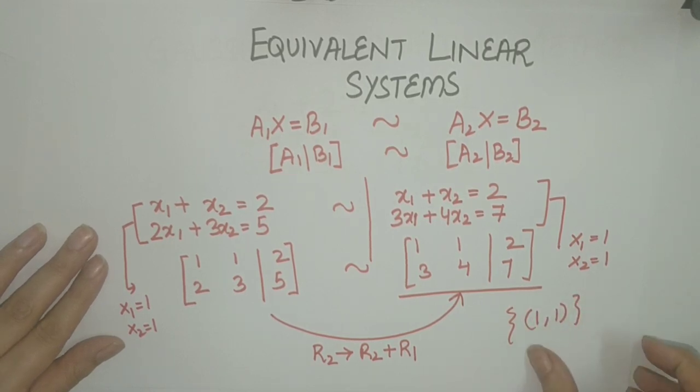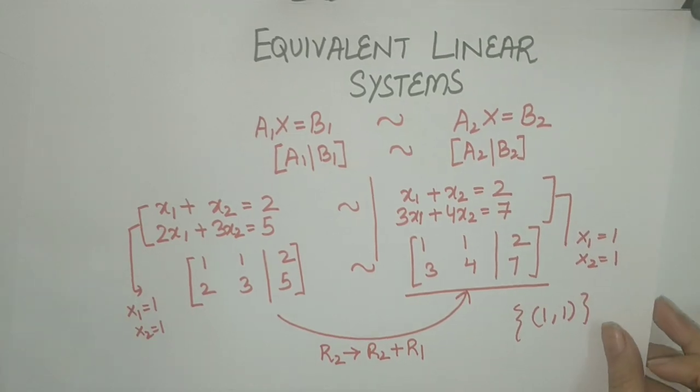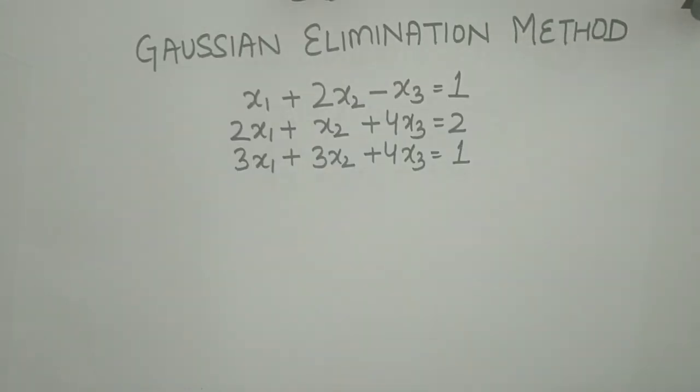It can be seen that the solution to the first system is x1 = 1, x2 = 1, and the second system also has solution x1 = 1, x2 = 1. Hence both systems have the same solution set {1, 1}. Let us now move ahead to discuss what Gauss elimination method is. In this method, we reduce the augmented matrix to its equivalent echelon form.